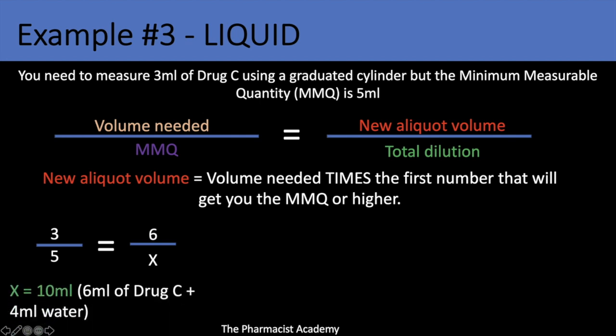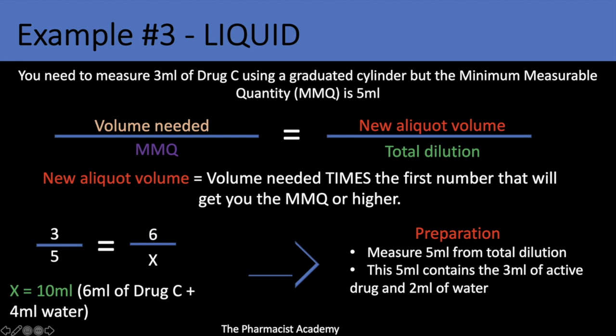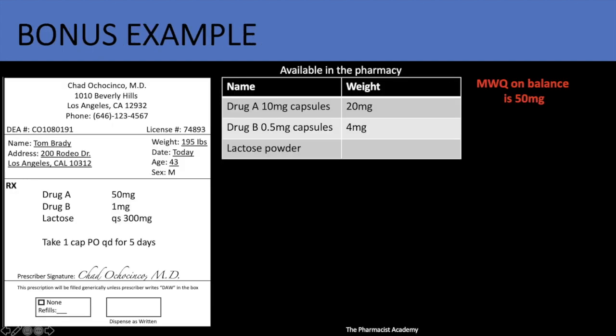You will create a total dilution of 10 ml: 6 ml of drug C plus 4 ml of water. For preparation, measure the minimum measurable quantity — 5 ml from the total dilution — and this 5 ml contains 3 ml of active ingredient and 2 ml of water.